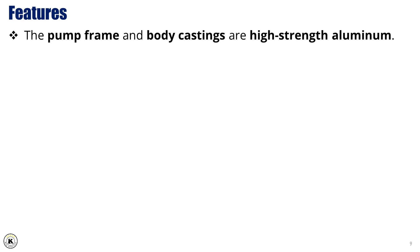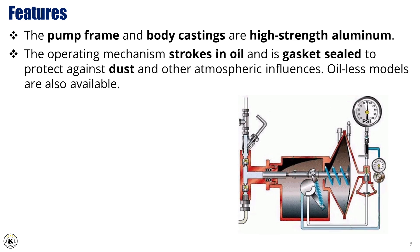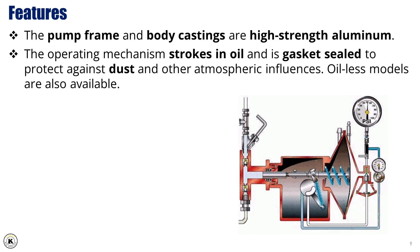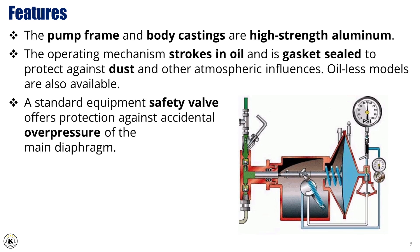The pump frame and body castings are made from high-strength aluminum, providing a strong yet lightweight structure that can withstand the rigors of field operations. The operating mechanism functions in an oil bath and is gasket-sealed to protect internal components from dust, moisture, and other atmospheric contaminants, ensuring smooth operation and longevity even in harsh environments. For specific applications where oil use is restricted, oil-less models are also available. To enhance operational safety, the pump comes equipped with a standard safety valve designed to protect the main diaphragm from accidental overpressure, preserving both equipment integrity and personnel safety.